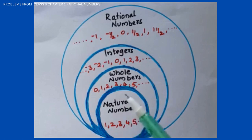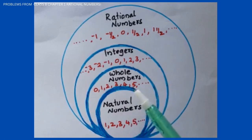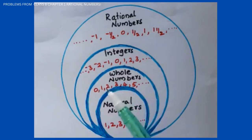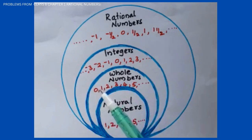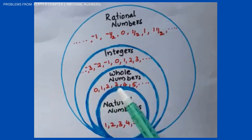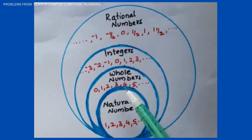The next set is whole numbers. What are whole numbers? Whole numbers are natural numbers and 0 — that is 0, 1, 2, 3, 4, 5, etc., up to infinity.